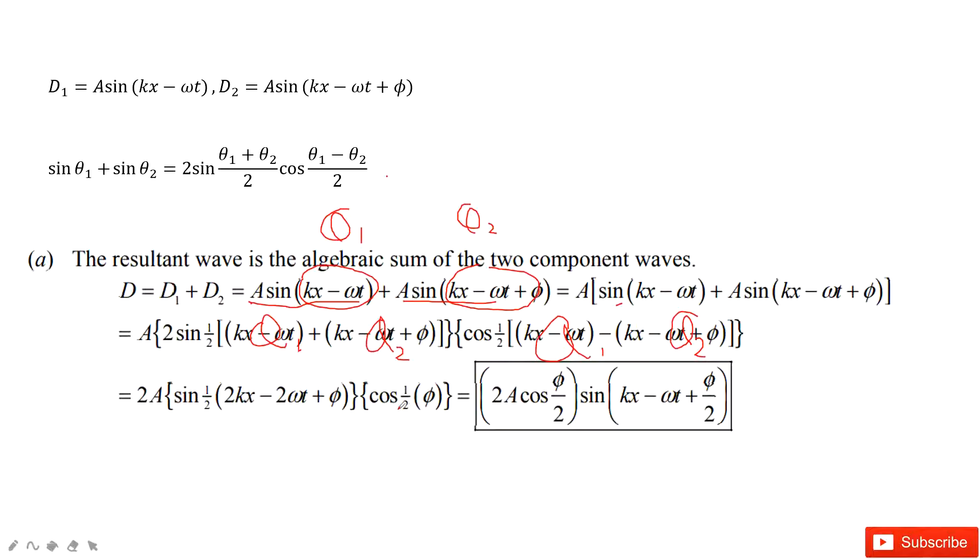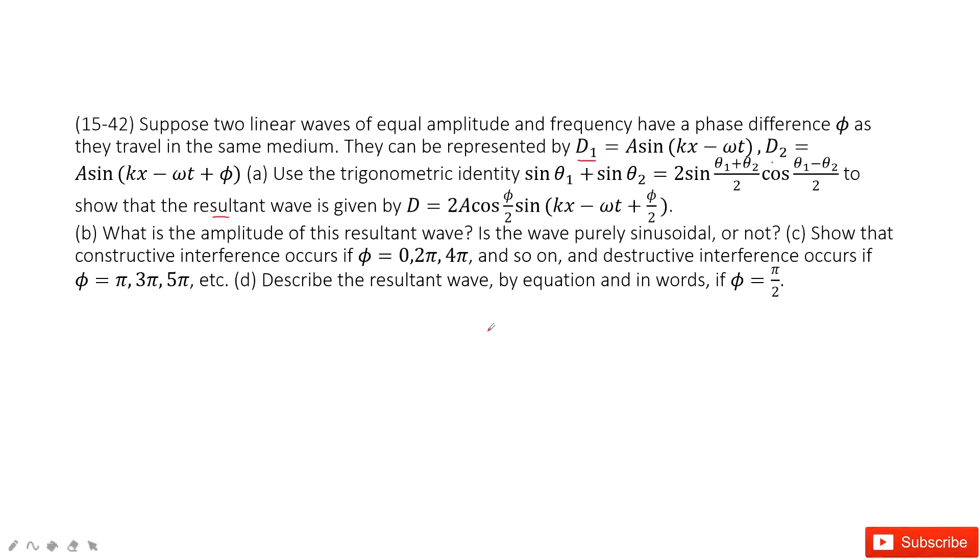At this function, you can see cosine in this term never depends on x or t. So we can take it out and write it as this function. Now the thing is proved.